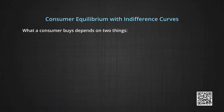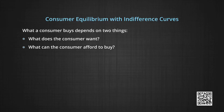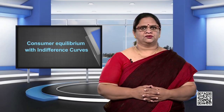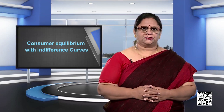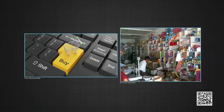What a consumer buys depends on two things. One, what does the consumer want? And two, what can the consumer afford to buy? In this module, we examine the first question: how does the consumer decide what to buy, and in how much quantities?